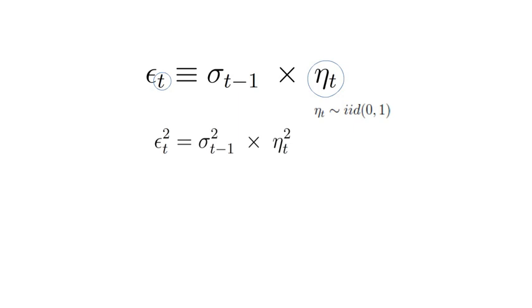If you take the expectation on both sides, you see that the average εT squared should coincide with σt-1. And therefore, if you observe serial correlation in εT squared, that is an indication that the variance of the return shock exhibits autocorrelation.